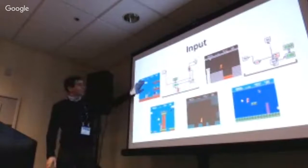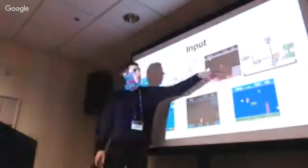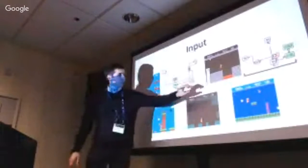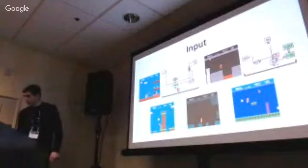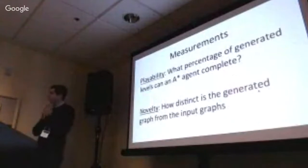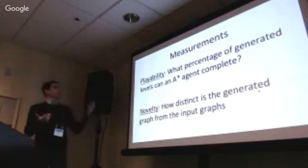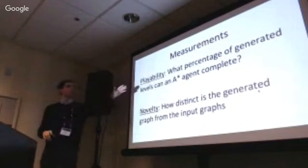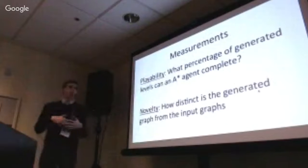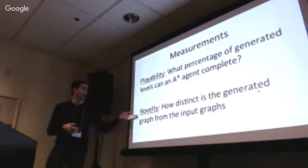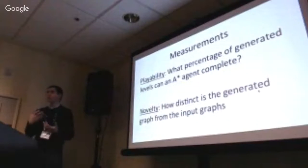The five level types are above-ground, boss, treetop, underground, and underwater levels. We use two measurements to evaluate: playability — what percentage of generated levels can an A* agent complete, having each blended model generate 100 levels — and novelty — how distinct the generated graph is from the input graph, based on graph distance normalized across the maximum possible distance.